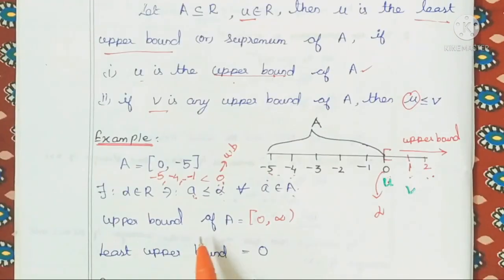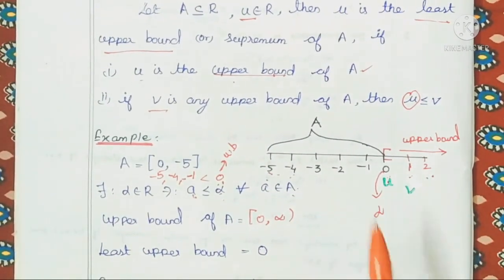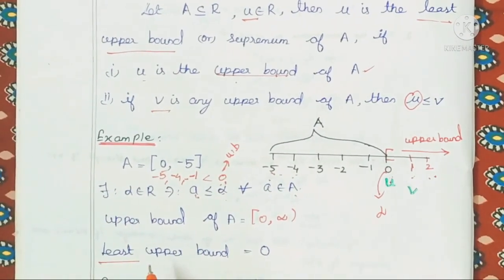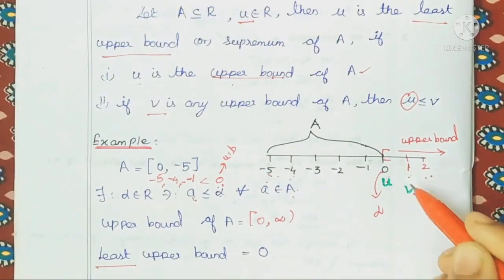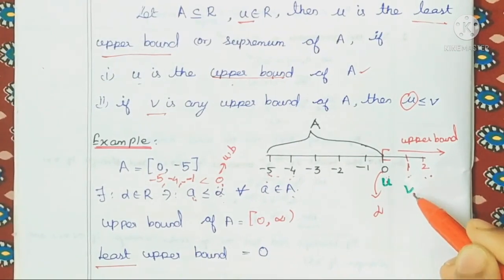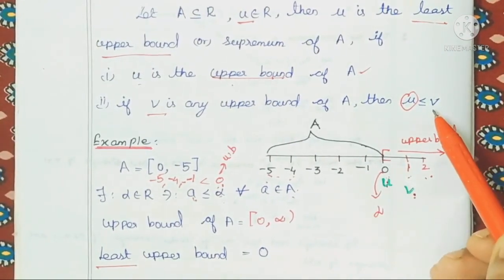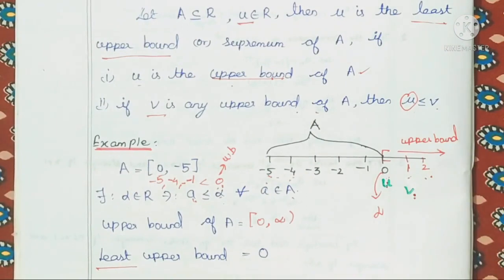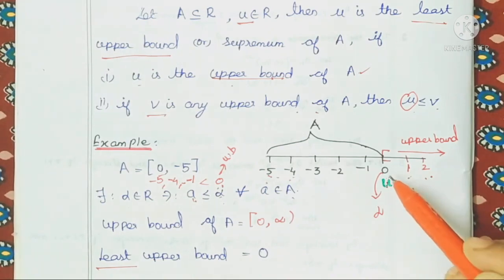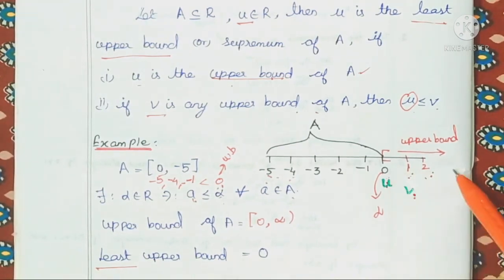1 is the least upper bound. We have the same set. If I put a least upper bound, I will put 1 on the other side — this is V. I will put a second condition: if V is any other upper bound, then U is less than or equal to V. So if I put 1, it will be greater.